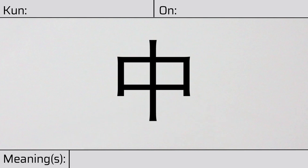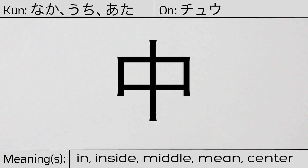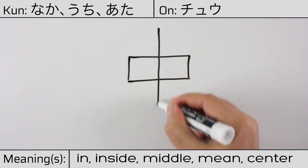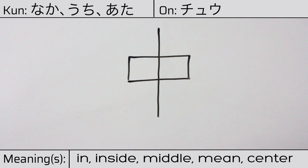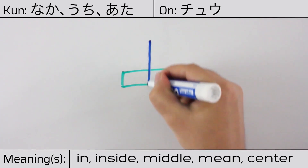Welcome to this lesson on Japanese kanji. Today, we'll be discussing this character. This kanji has kunyomi or Japanese readings of naka, uchi, or ata, and it has an onyomi or Chinese reading of chu. This character has the meanings in, inside, middle, mean, or center. Here is the stroke order. This character is made up of the following radicals or parts: the mouth radical kuchi, followed by a bisecting vertical stroke.